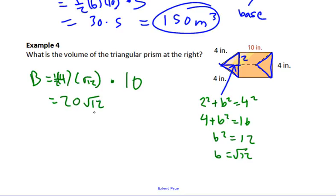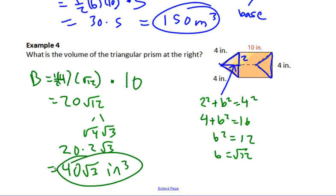And that can actually be factored as well. That would be the square root of 4 times the square root of 3, so that would be 2 square roots of 3, which would make it 20 times that, which would be 40 square roots of 3 inches cubed. You can take your calculator and do that as well. I'm going to leave it in exact form. That's how you find the area of a prism, whether it's a regular rectangular prism or a triangular prism.